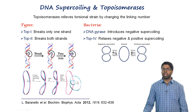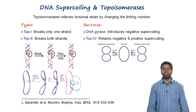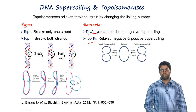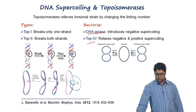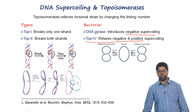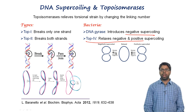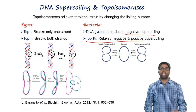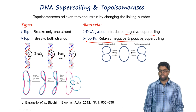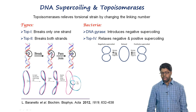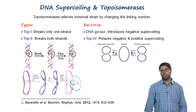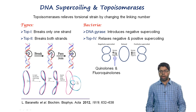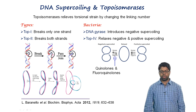Bacteria have type 2 topoisomerases, which can be further classified into DNA gyrase and topoisomerase IV. DNA gyrase introduces negative supercoiling, whereas topoisomerase IV relaxes both negative and positive supercoiling. These enzymes are the targets for antibiotics such as quinolones and fluoroquinolones.